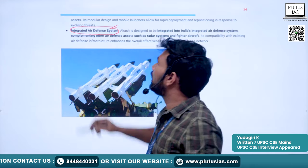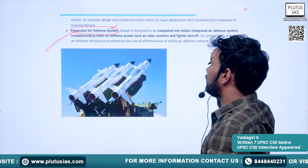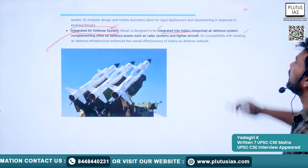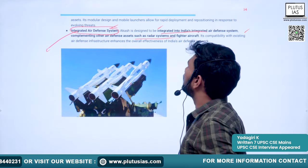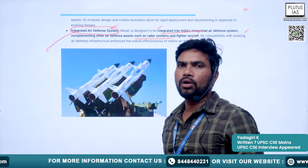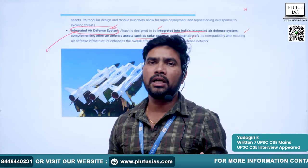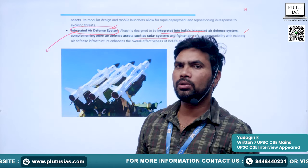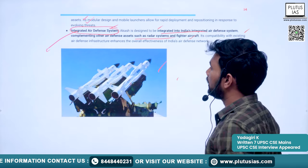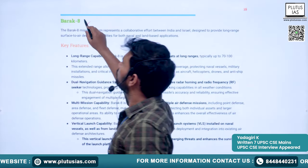Akash is part of India's integrated air defense system, designed to work alongside other assets such as radar systems and fighter aircraft. India must not only have strike capability but also protect itself from enemy attacks. Akash fulfills this defensive role.